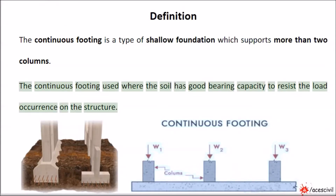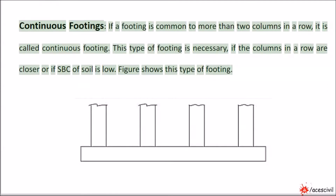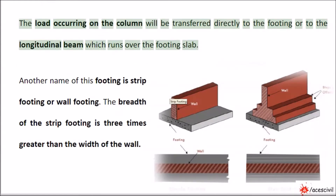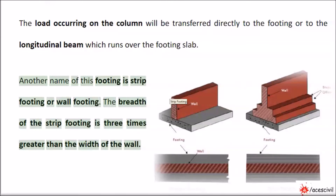Continuous footing is used where the soil has good bearing capacity to resist the load occurring on the structure. If a footing is common to more than two columns in a row, it is called continuous footing. This type of footing is necessary if the columns in a row are closer or if the safe bearing capacity of soil is low. The load occurring on the column will be transferred directly to the footing or to the longitudinal beam which runs over the footing slab. Another name of this footing is strip footing or wall footing.